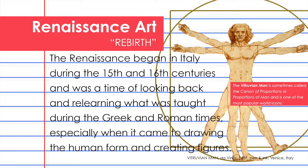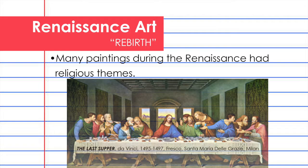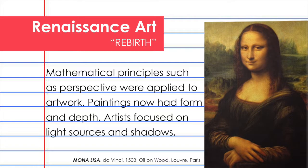The Vitruvian Man was created in 1487. Many paintings during the Renaissance had religious themes, such as this all-time favorite entitled The Last Supper by Leonardo da Vinci, created in 1495 to 1497, which is a fresco. Mathematical principles such as perspective were applied to artwork — paintings now had form and depth, and artists focused on light sources and shadows.